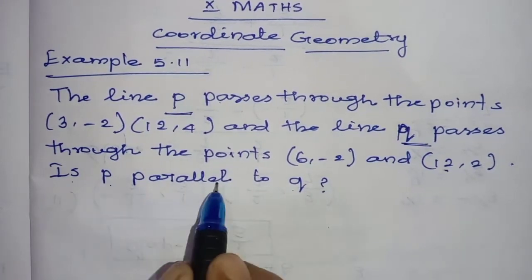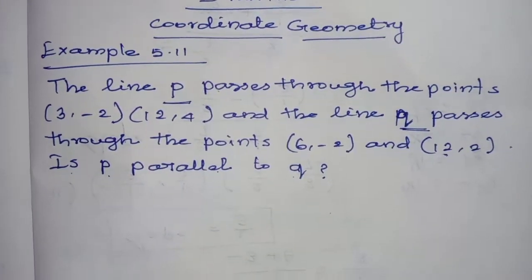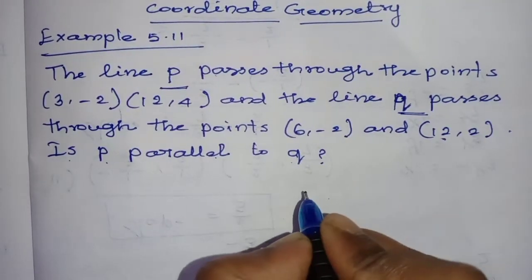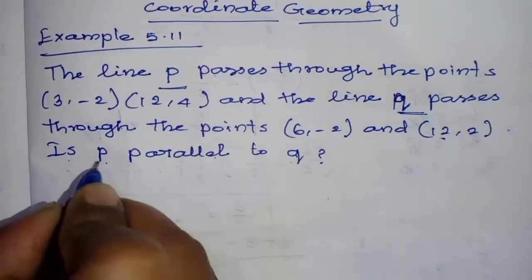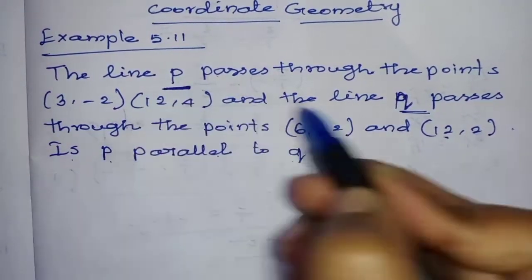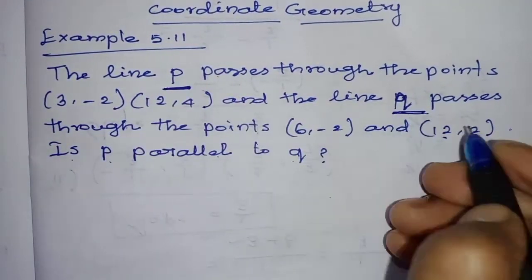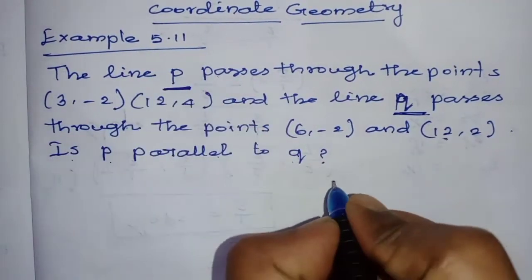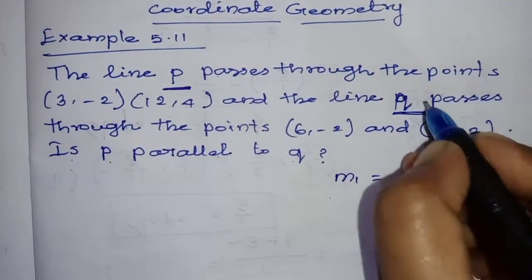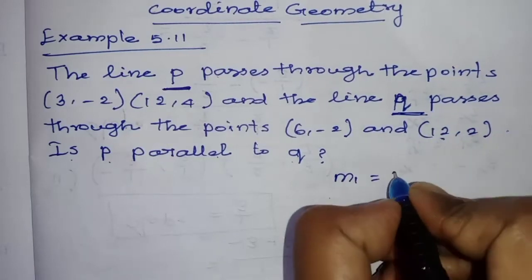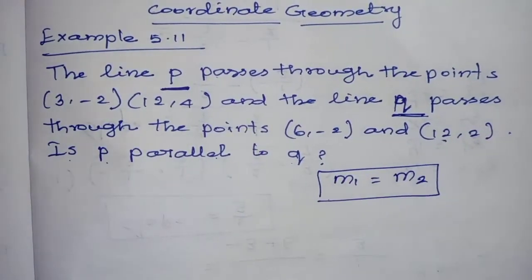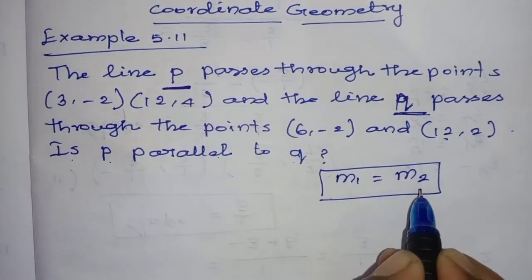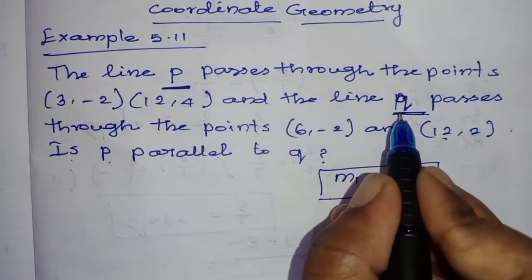The line P and Q are parallel if the slope of line P equals the slope of line Q. So first, line P has slope M1 and line Q has slope M2. M1 equal to M2 is the condition. If two lines are parallel, then their slopes are equal.